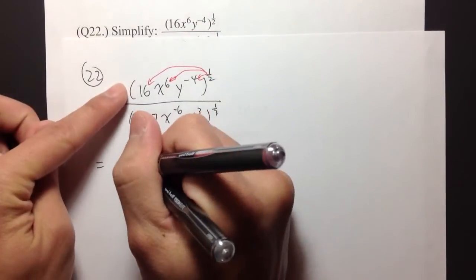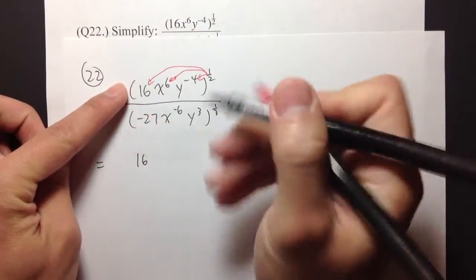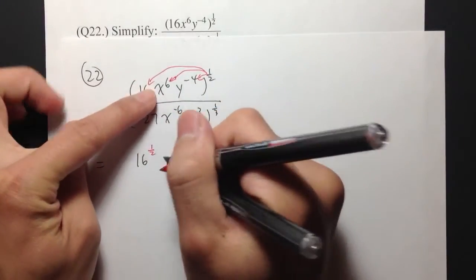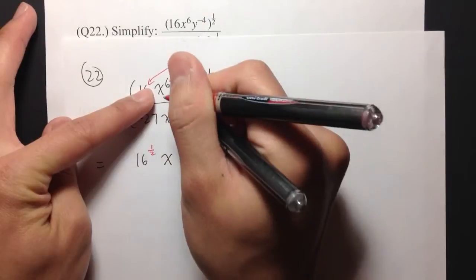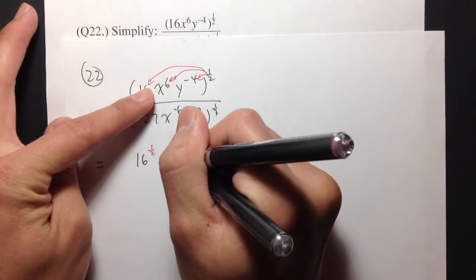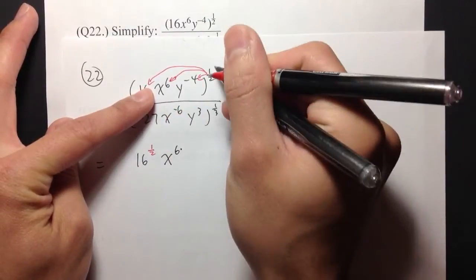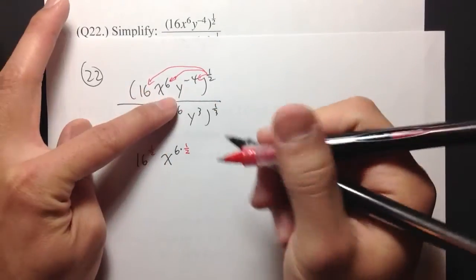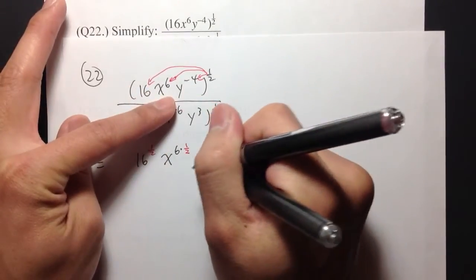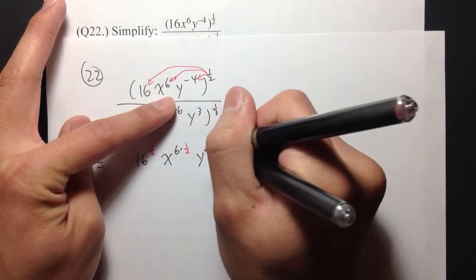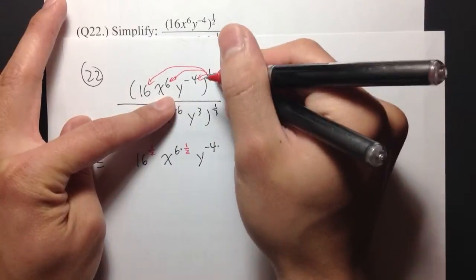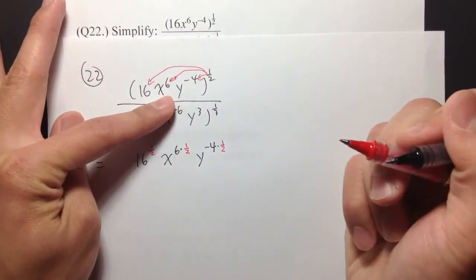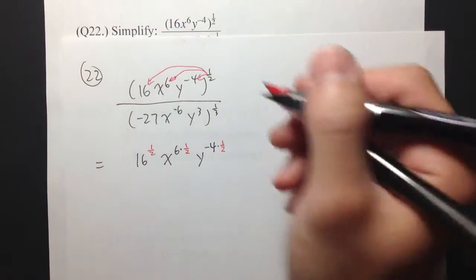So I'm going to have 16 raised to the 1 half power. And then for the next one, I will have x raised to the 6, but then I will multiply by 1 half. And then y to the negative 4, multiply by 1 half. So that will be the top.